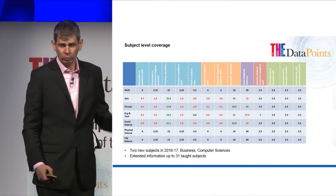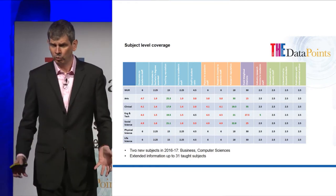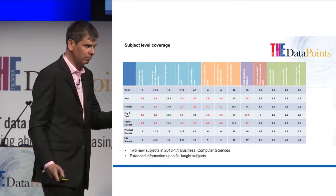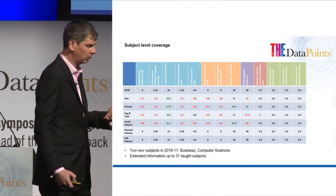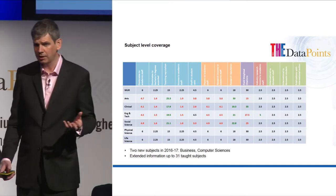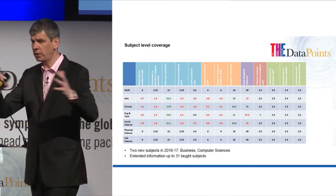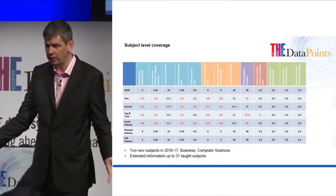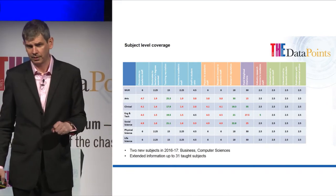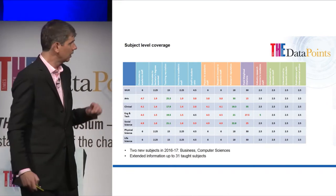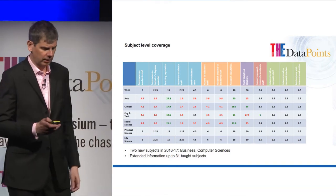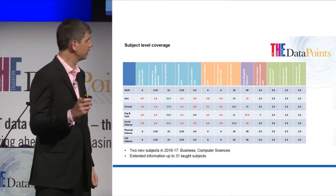In addition, we'll be starting to explore an even more detailed level, because students who come to explore our site aren't interested in the broadness of physical sciences — they want to know whether a university teaches physics. So we'll be expanding that into 31 more detailed category areas.